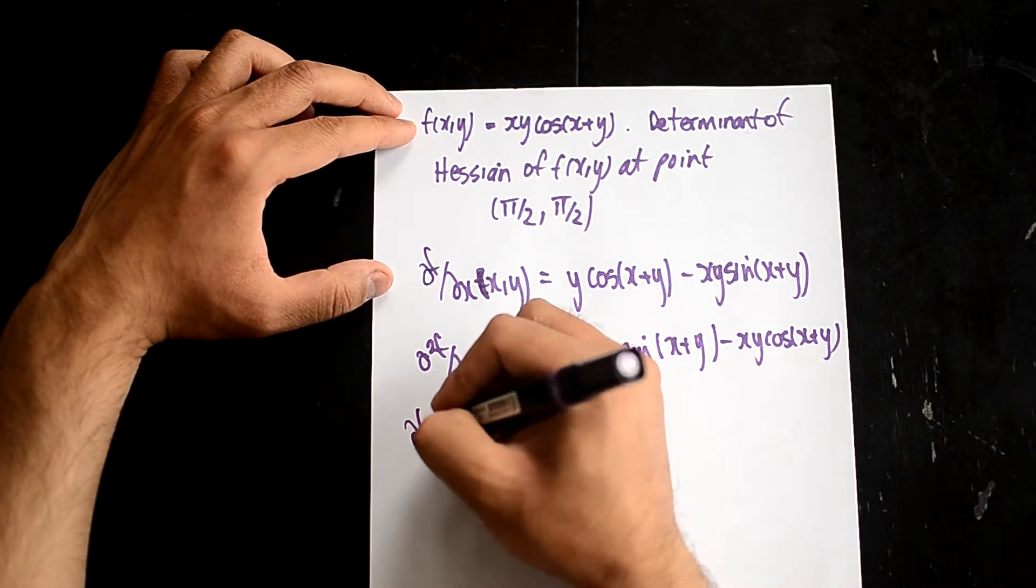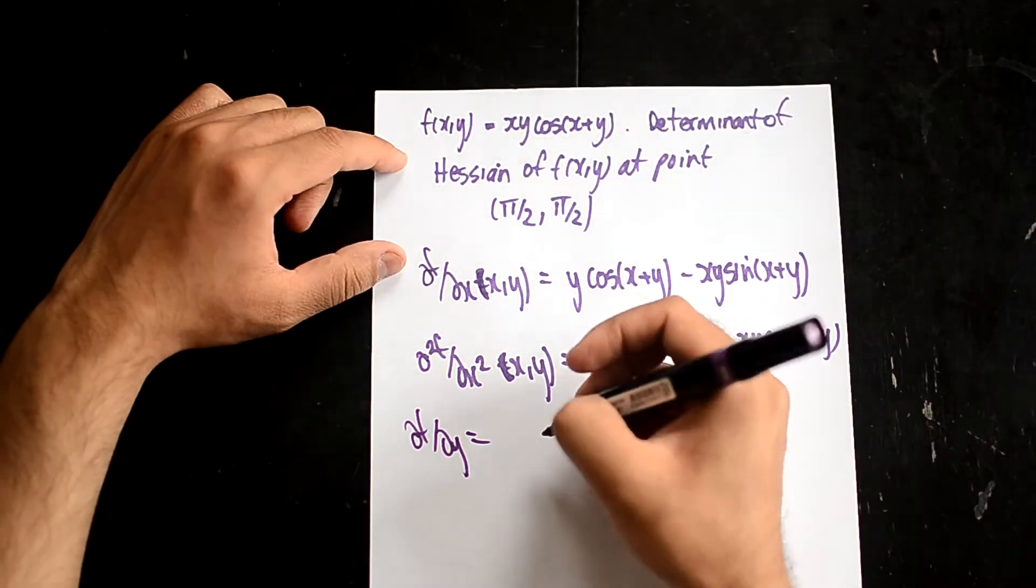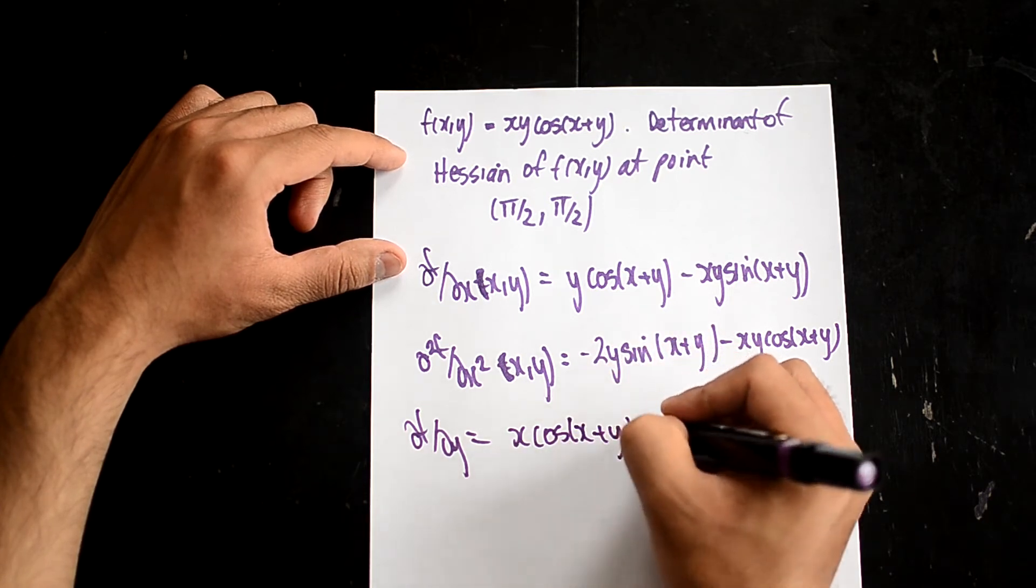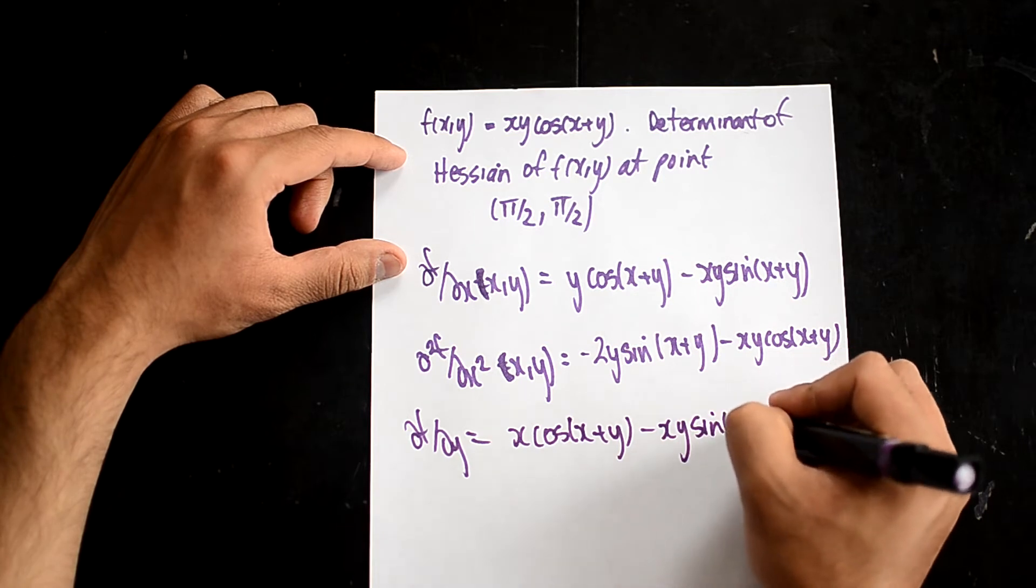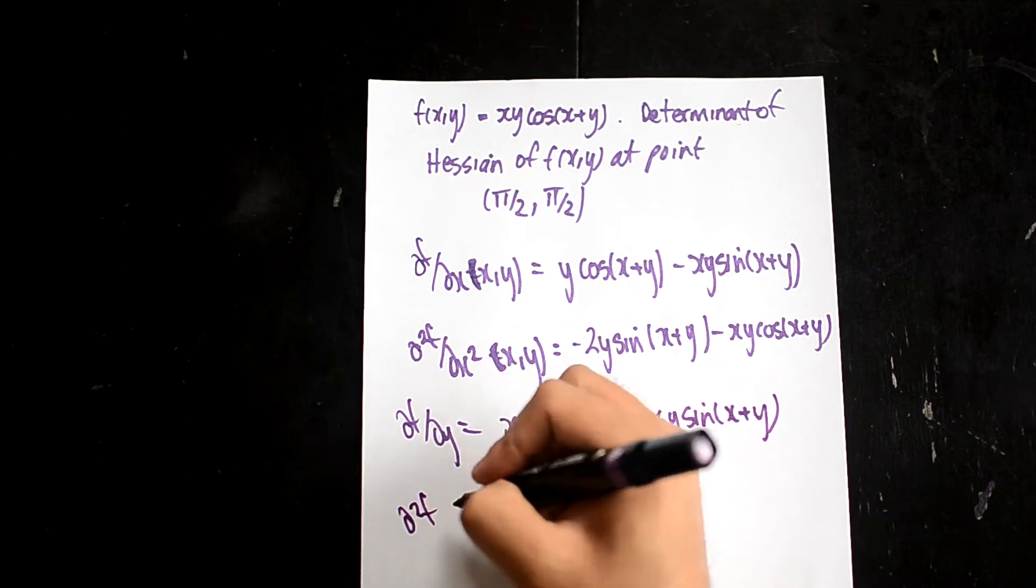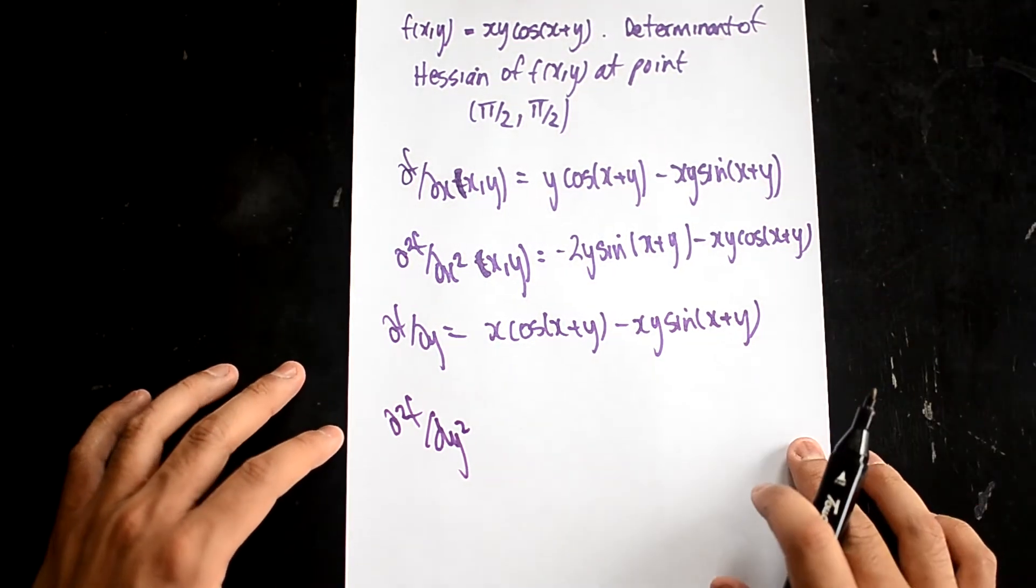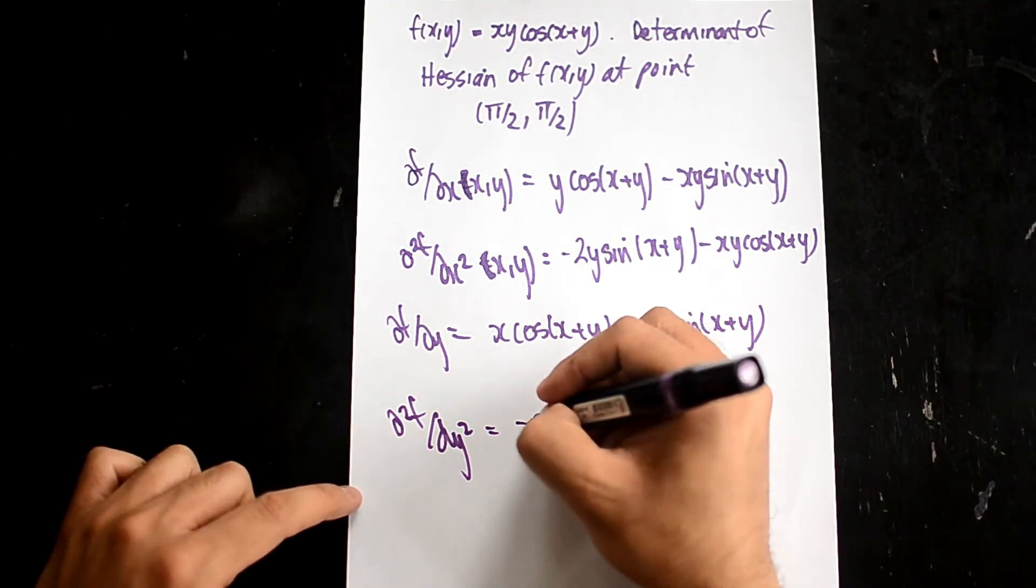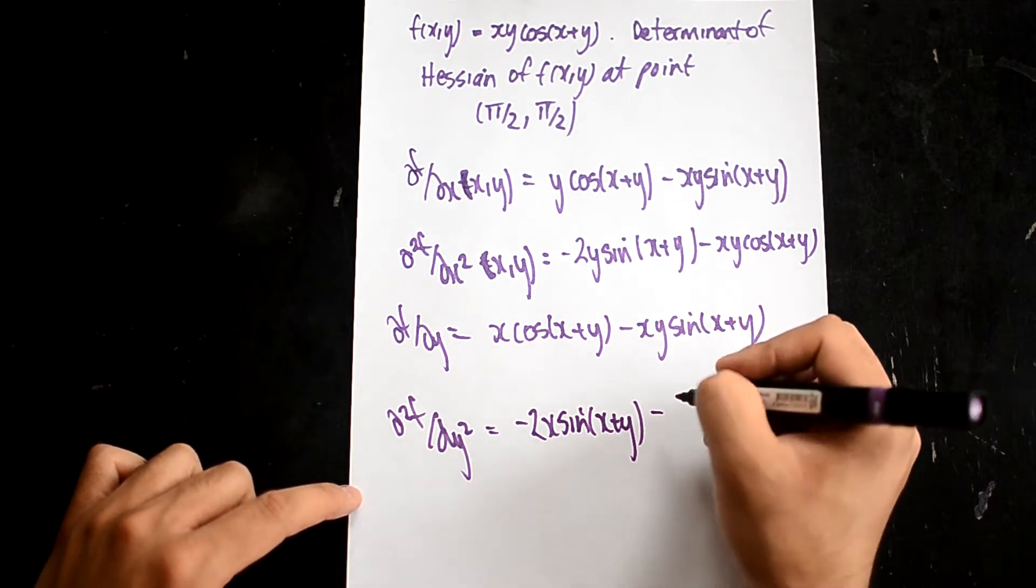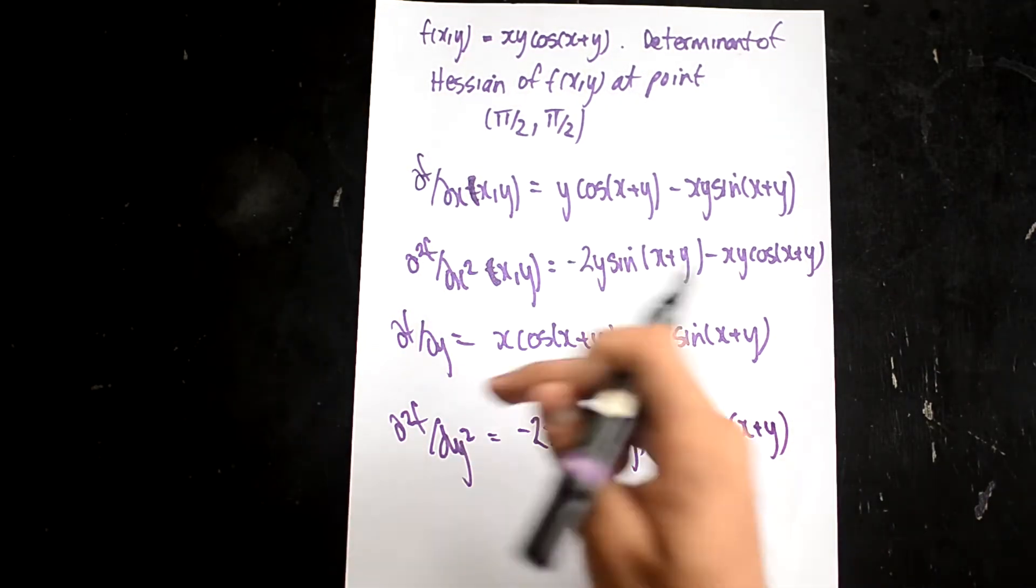So now I'm going to do df/dy. Finding what df/dy is, again we have to use the product rule on this. And you should get x cos(x+y) - xy sin(x+y). And then if I differentiate this again, we should get -2x sin(x+y) - xy cos(x+y). So we have df/dy and d²f/dy².